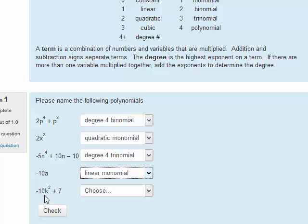Last, we have k squared. k is the variable. It's squared, that makes it quadratic. And there are 2 terms separated by a plus sign. So that is a quadratic binomial.